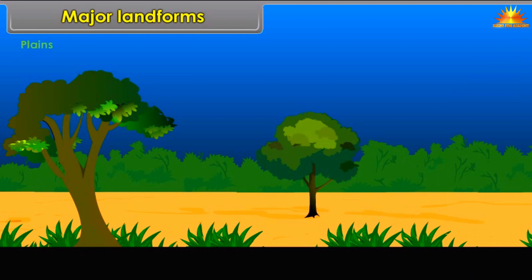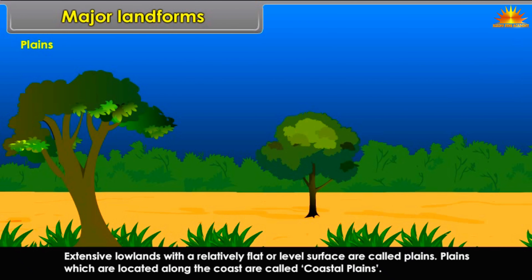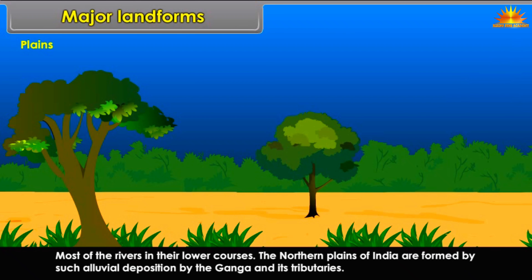Extensive low lands with a relatively flat or level surface are called plains. Plains located along the coast are called coastal plains. Most rivers deposit sediment in their lower courses. The northern plains of India, for example, are formed by alluvial deposition by the Ganga and its tributaries.